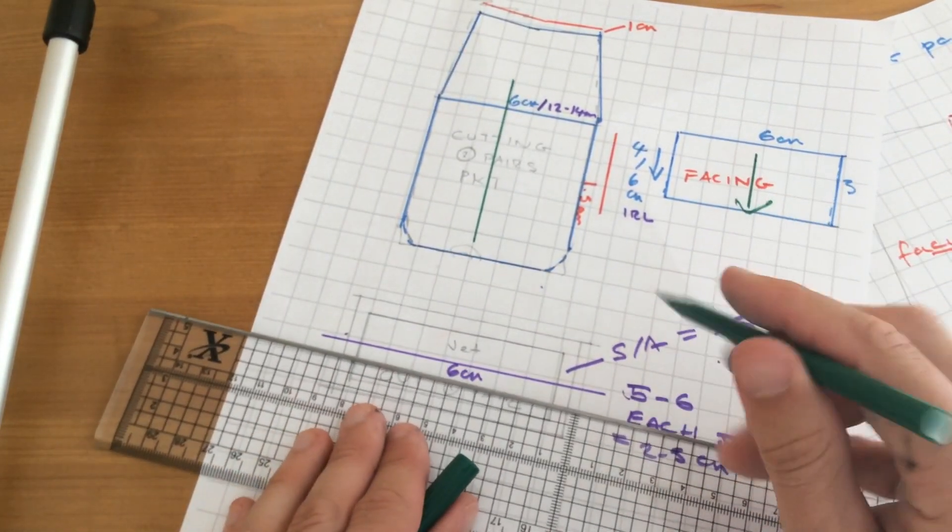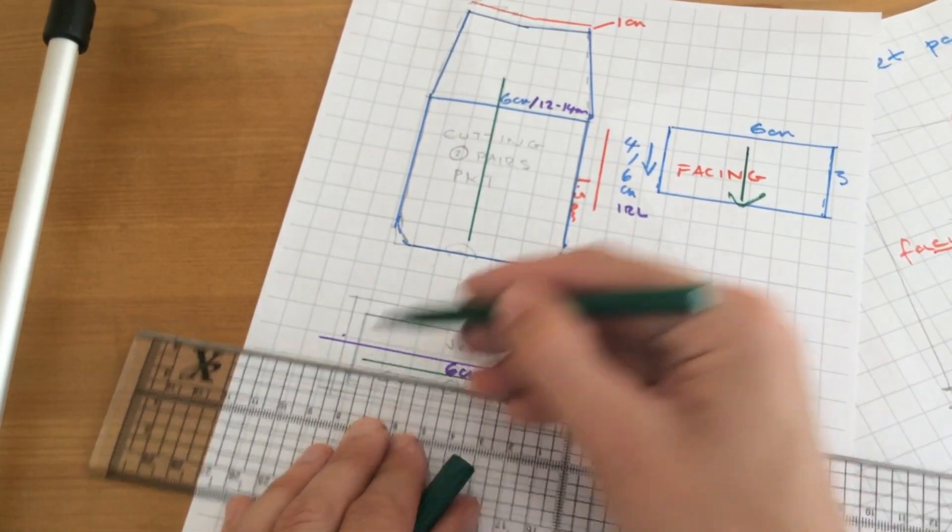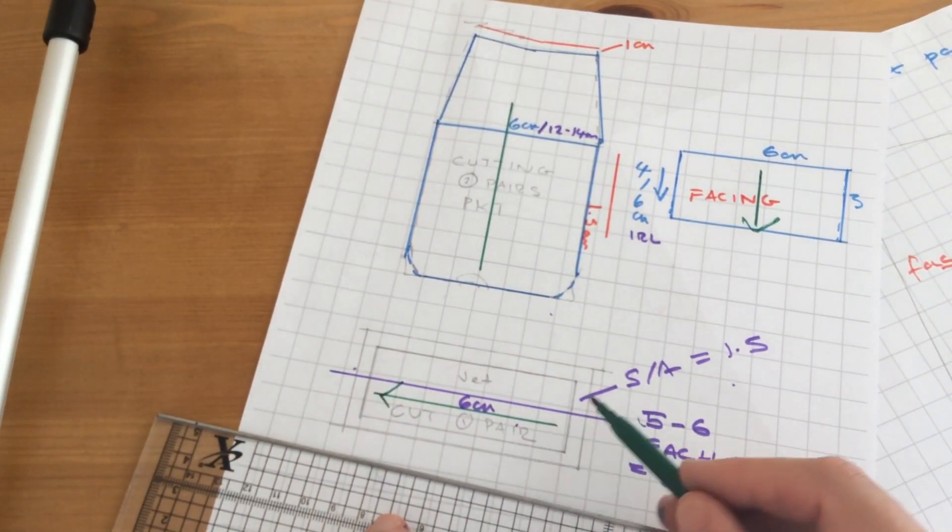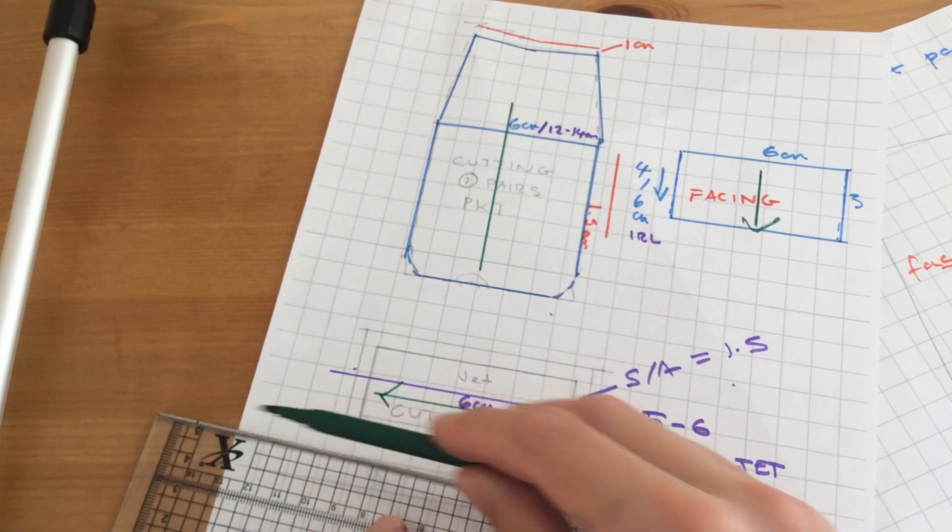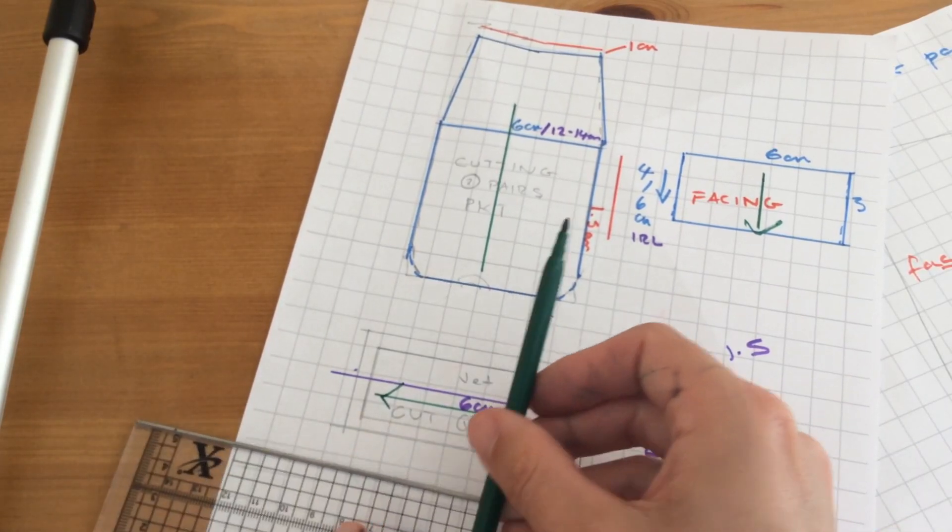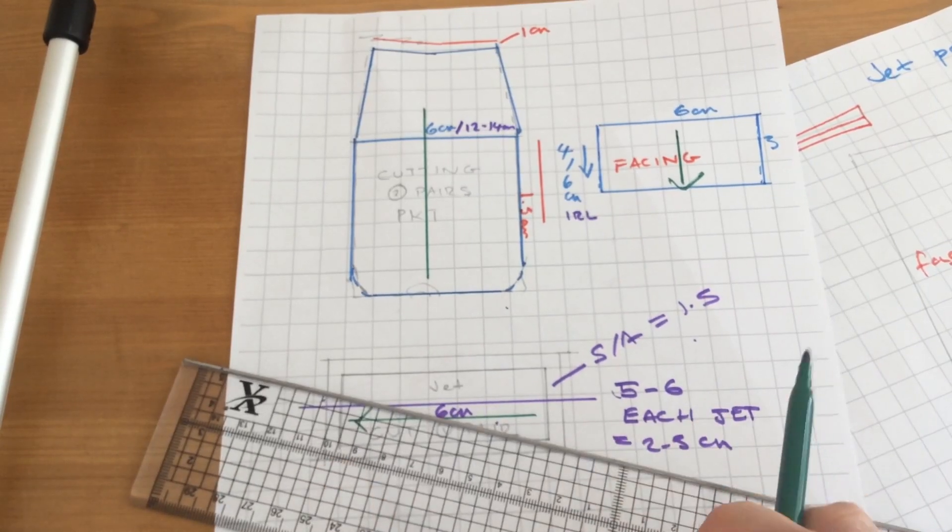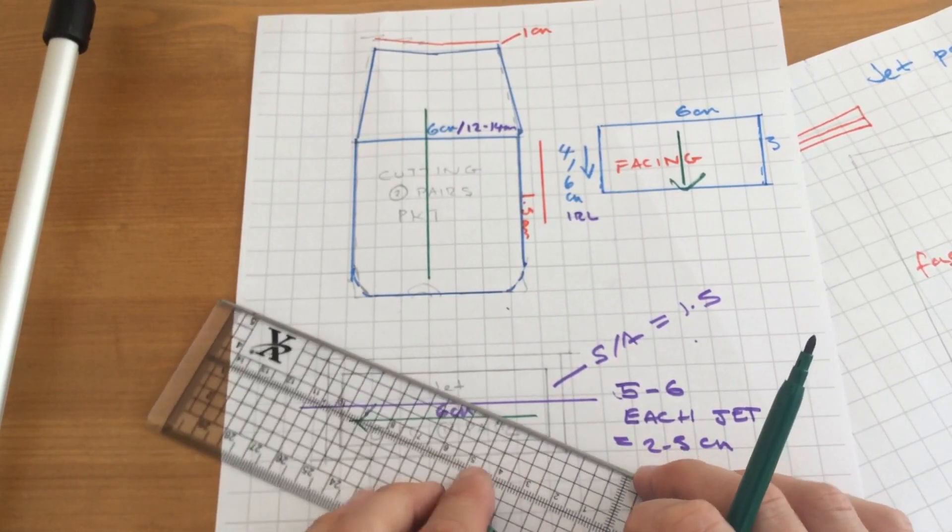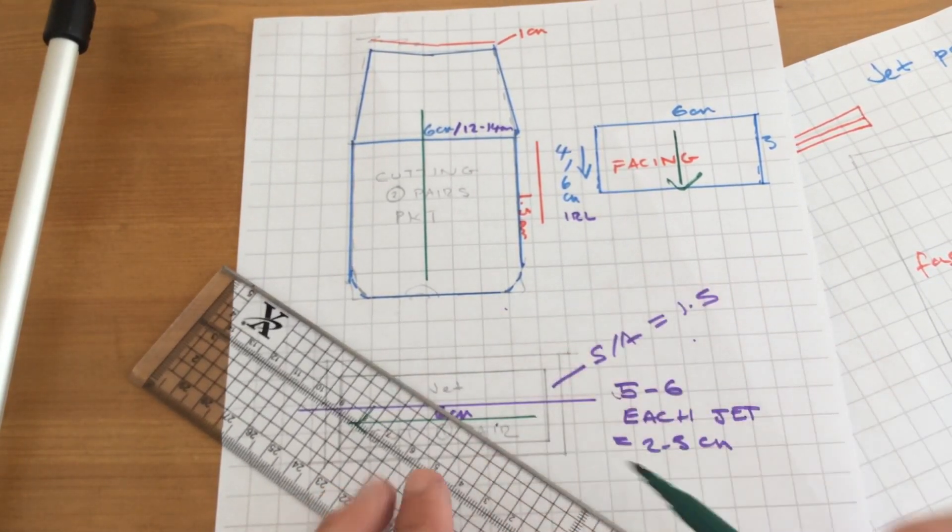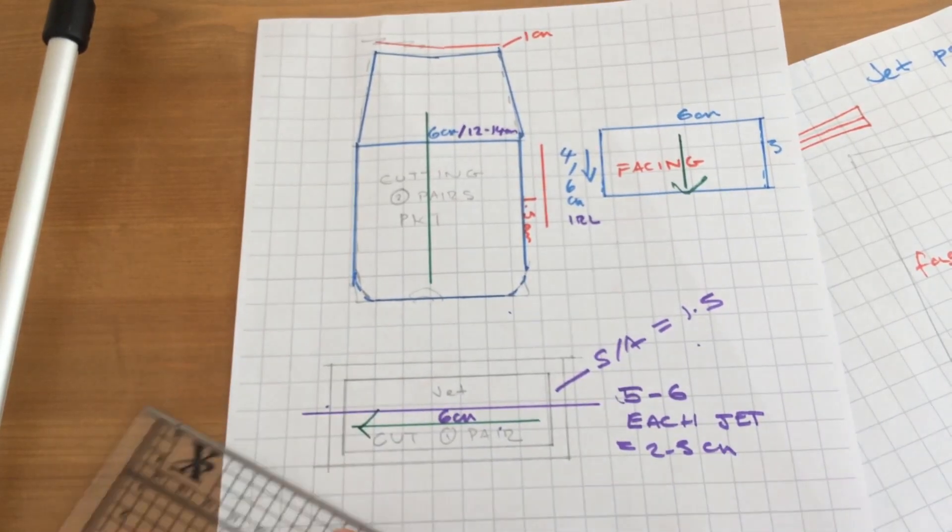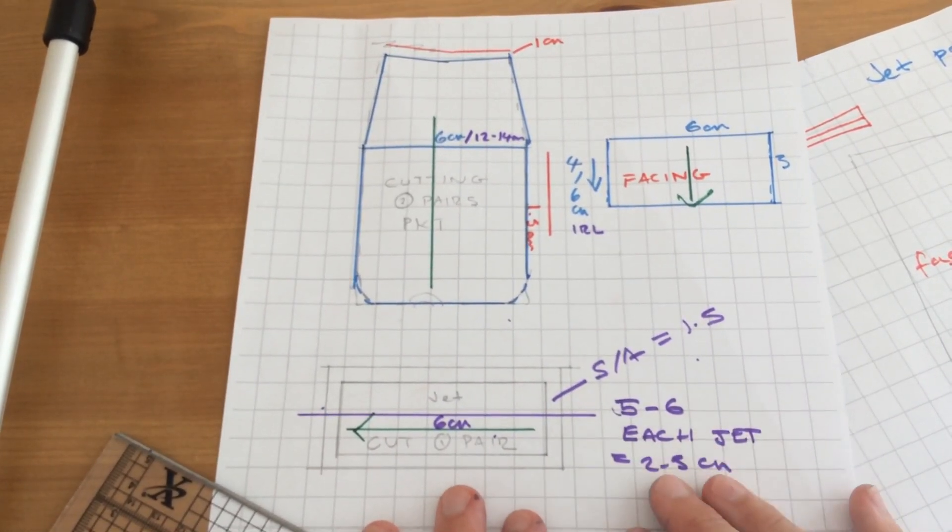The grain line for jets is always running across because the grain line is stronger with the weave going that way. There's nothing to stop you putting it that way for whatever reason for print or for matching. Now some people do cut jets on the bias, but that involves sewing it in the women's wear way. This would be for the tailoring way.